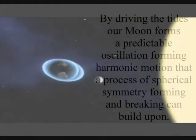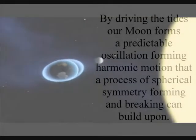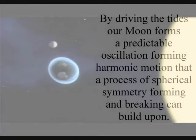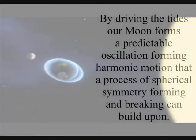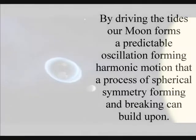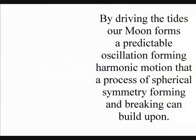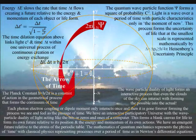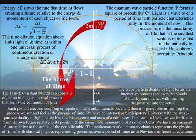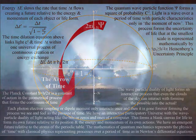By driving the tides, our moon forms a predictable oscillation, forming harmonic motion, that a process of spherical symmetry forming and breaking can build upon. Photon energy cascades down from the sun, forming greater degrees of freedom for entropy, with the momentum of light forming the driving force for life.